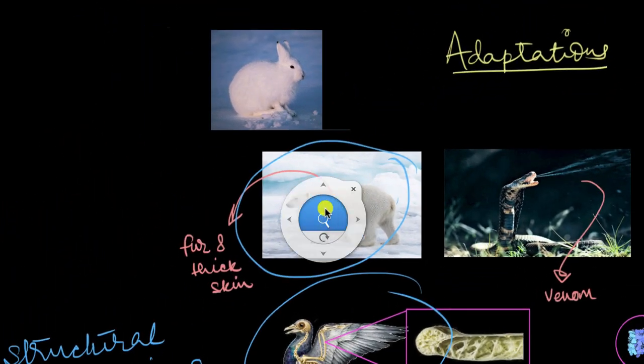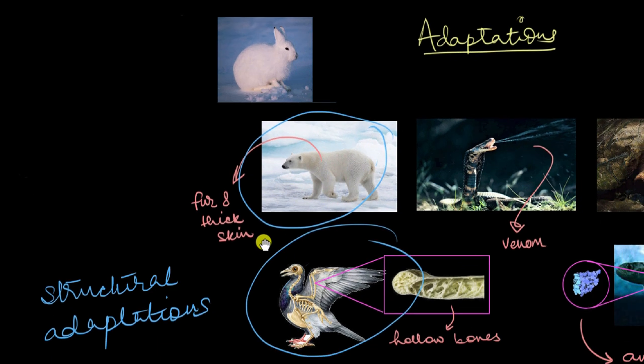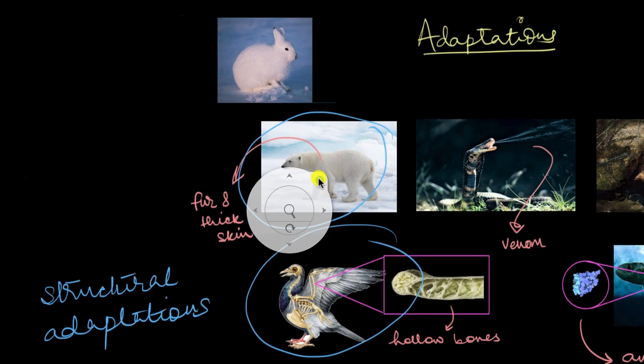So this is an arctic hare. And animals like these, they have shorter, thicker body parts. Like if you look at their limbs, they're pretty short, right? They're short and thick. Why? Because they have a much less surface area compared to their volume. And this kind of reduces the heat loss. So it keeps them warm.